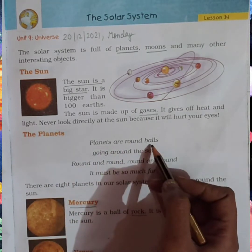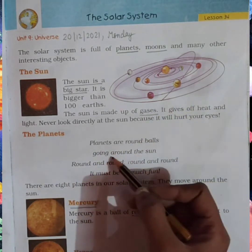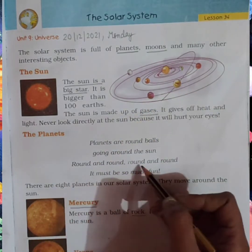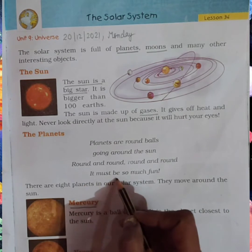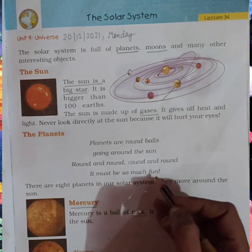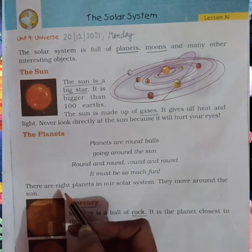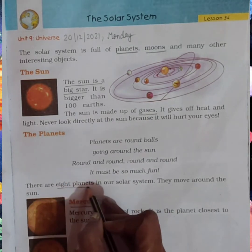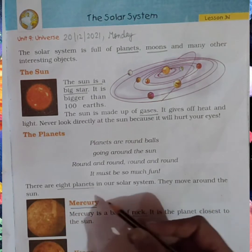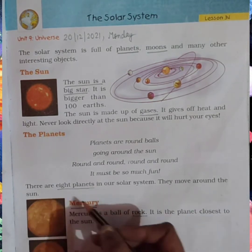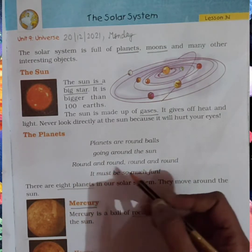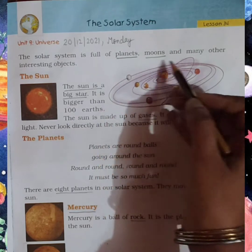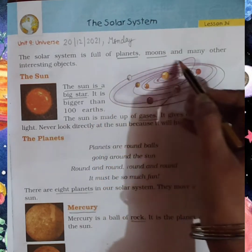Planets are round balls going around the sun — round and round. There are 8 planets in our solar system. Underline this: 8 planets — remember this. They move around the sun. As you can see in this picture, this one is the sun and these all are planets moving around it.